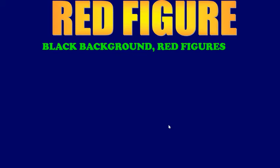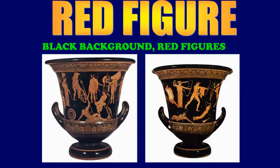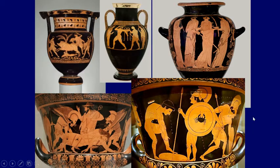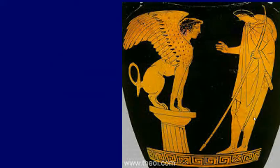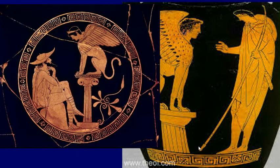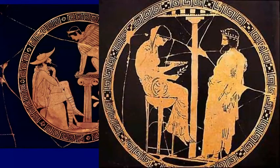We've been looking at black figure vases — now I'm going to show you red figure vases. Write down this definition: Red figure means it has a black background and the people or figures are red. Here are a couple of examples of red figure vases — the background is black and the people are red. By the way, this is a red figure vase of the story of Oedipus Rex and the Sphinx — here's Oedipus talking to the Sphinx, and then this is Oedipus going to the Oracle.